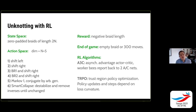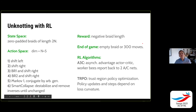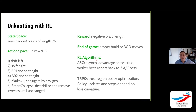For unknotting with reinforcement learning, our state space is zero-padded braids of length up to N. The action space has dimension N+5 — you can shift left, shift right, do a braid relation and shift right, do another type of braid relation and shift right, do a Markov move of type one conjugating by an arbitrary generator, and something we call smart collapse. Since we're trying to take the braid, which we know is an unknot, and shrink it down to nothing via these moves, a good reward is the negative braid length. End of game occurs when you hit the empty braid — that's like beating Bowser, you've won — or if you do 300 moves without solving it, that's a timeout.